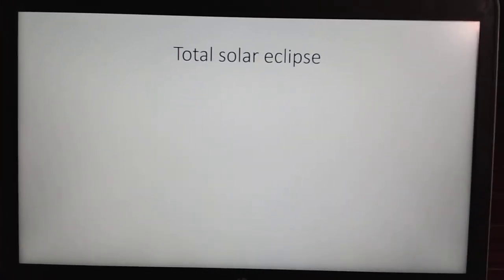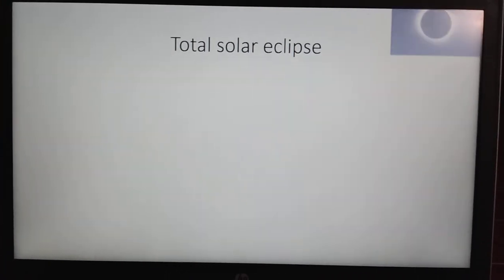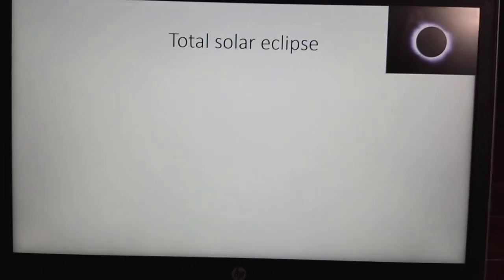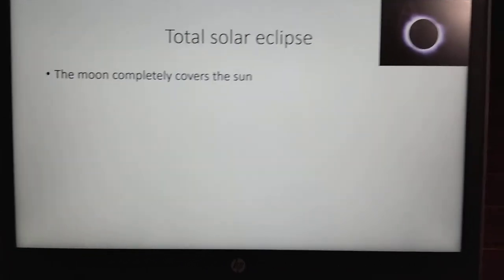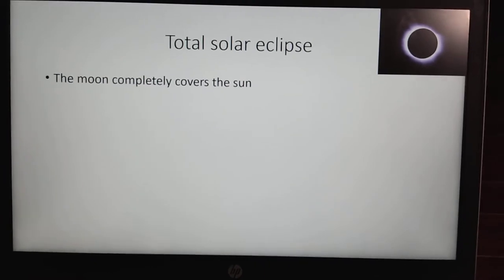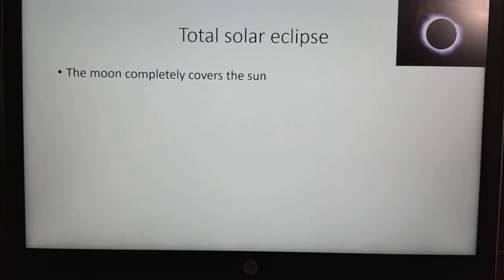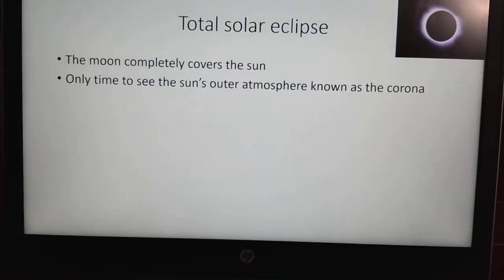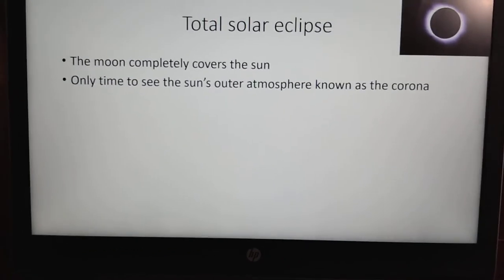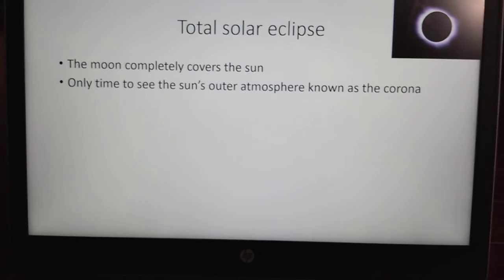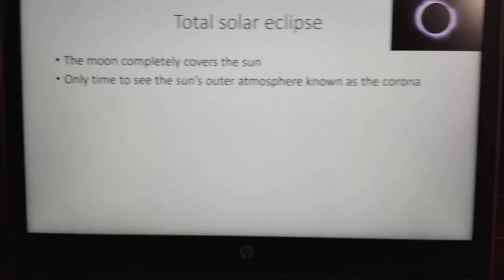The third kind of eclipse is a total solar eclipse. There's one in the upper right-hand corner. This one is also pretty self-explanatory. It is when the moon completely covers the sun. It is the only time to see the sun's corona, or outer atmosphere.